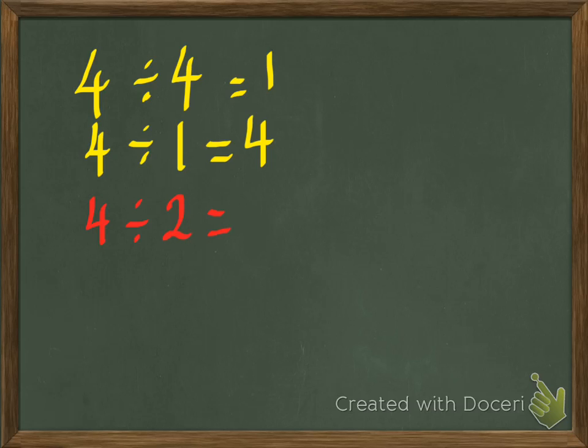And let's try 4. Well, yep, 4 divided by 4 is 1, and 4 divided by 1 is 4, but, and here is the problem, 4 can also be divided by 2. So 4 is not a prime number.